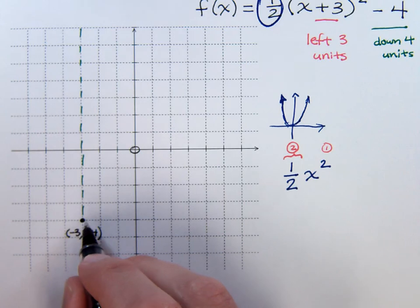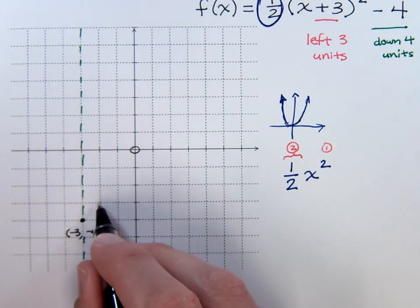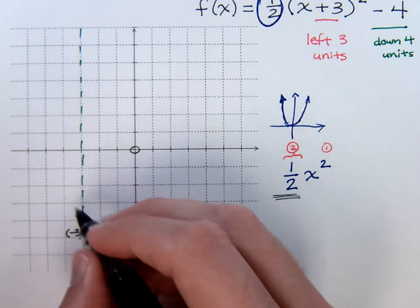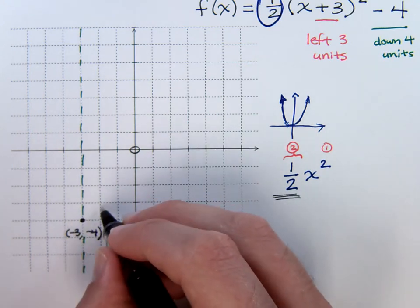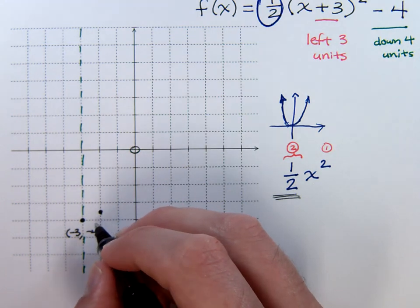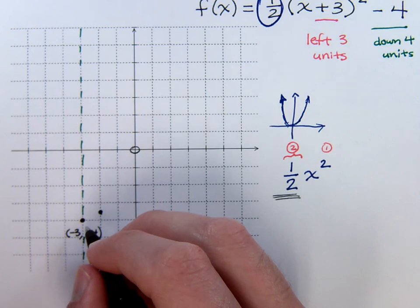From the vertex, if I go out one, I would square that to go up one, except now I've got this one half here. So, when I go out one, squared is one, I then have to multiply times a half. If you'd rather look at it as dividing by two, you can do that too. It's going to be the same thing.